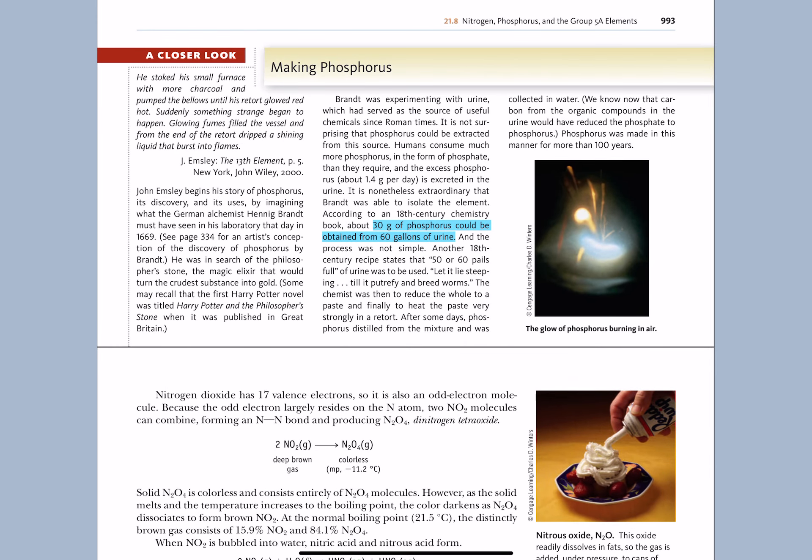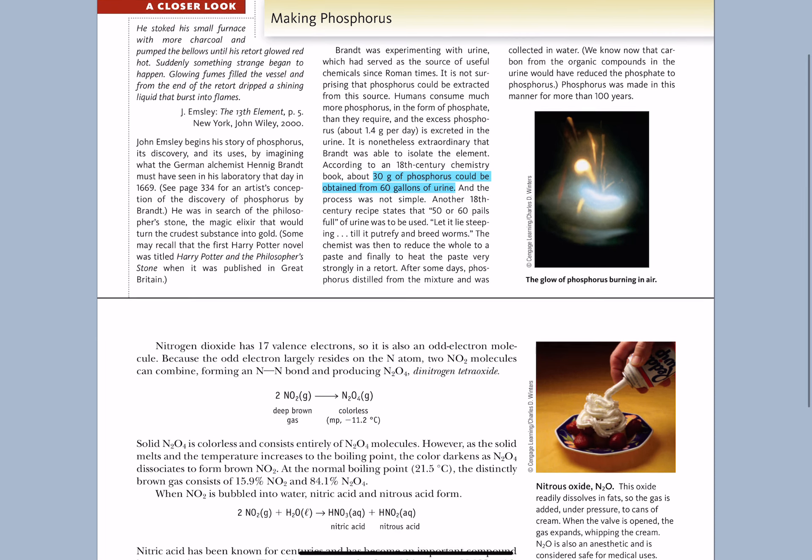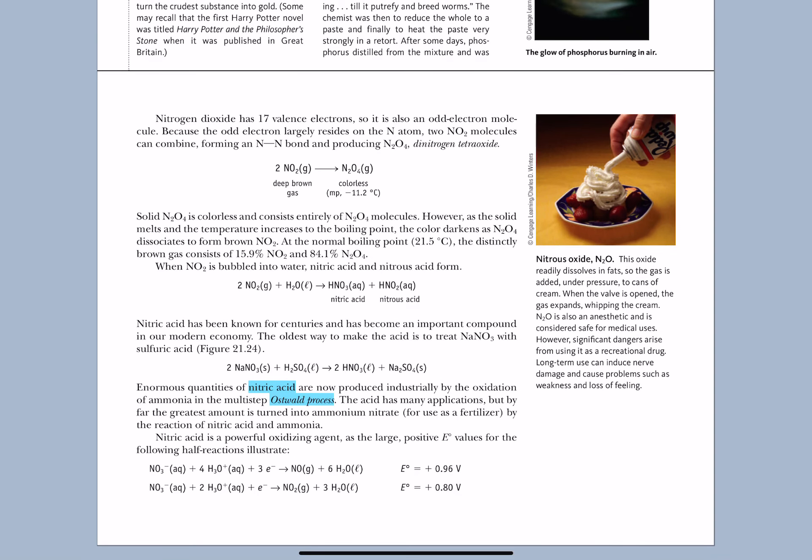How do they first make phosphorus? Look at this, how would you like to be the person who said you know what I want to do with my life? I want to isolate phosphorus. I'm going to get 60 gallons of urine to get a mere 30 grams of phosphorus after a lot of stinky work. We use some of these nitrogen oxides as propellants. We use nitric acid all the time as a precursor to all kinds of compounds.